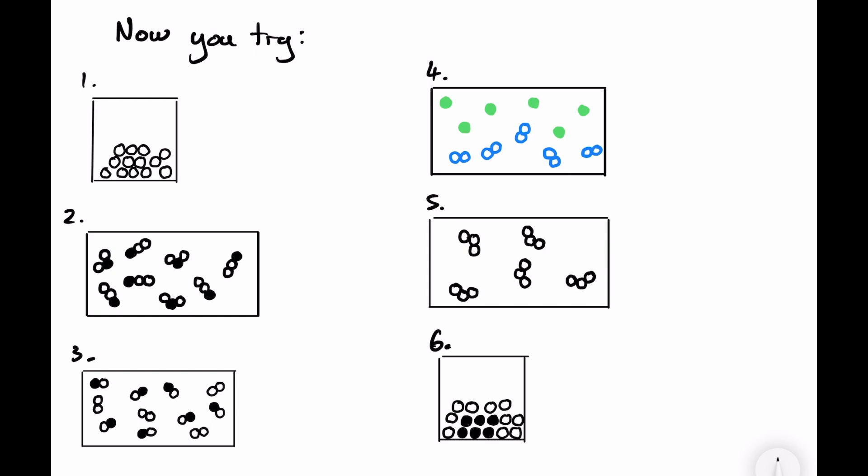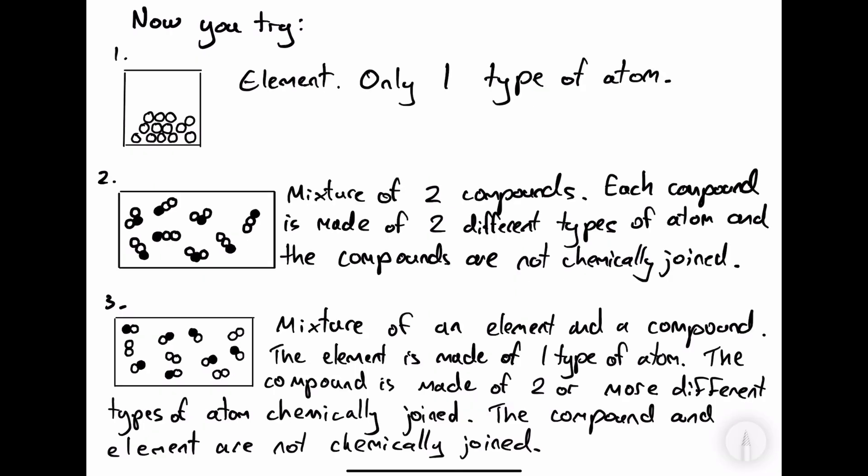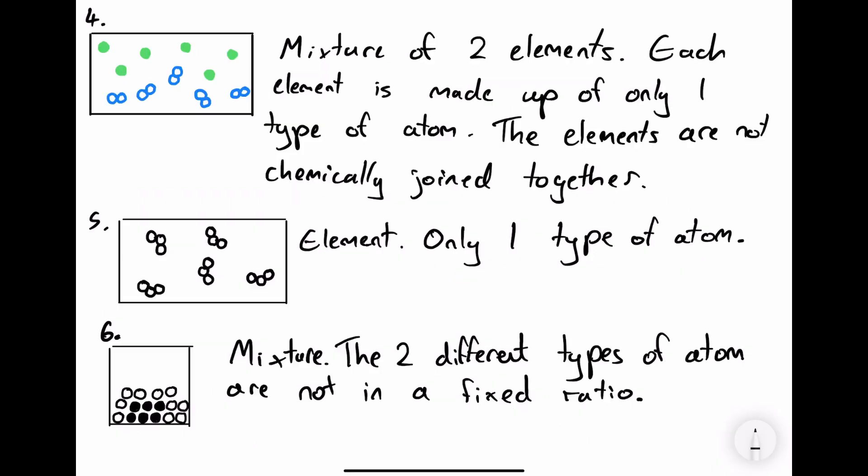Now pause the video and identify what each of the particle diagrams shows and explain why. Here are the answers for the first three, and here are the answers for the last three. Well done if you got the last one correct — it's a bit tricky. The reason it's a mixture is because the two different types of atom are not in a fixed ratio.